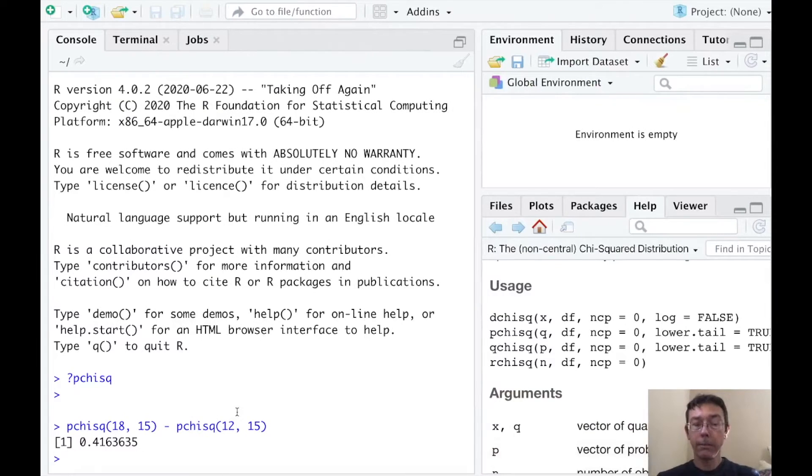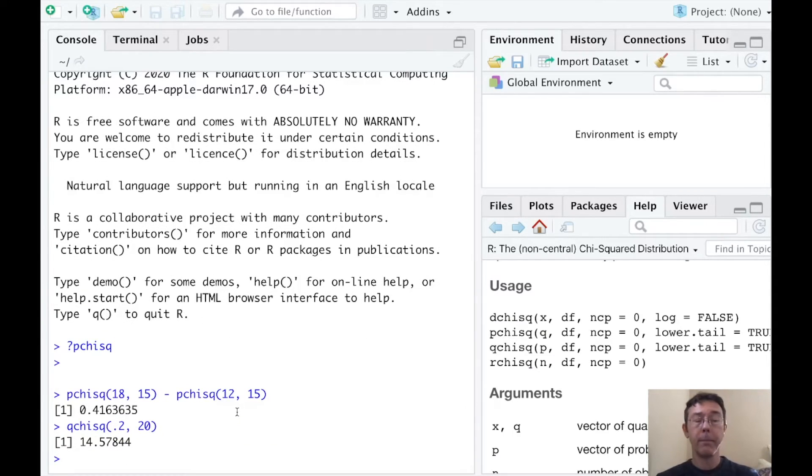Back to R. So the command is qchisq. In this case, the percentile we're interested in is 20% or 0.2. And of course, we're in a distribution with 20 degrees of freedom. So in this case, the x value of interest is 14.57844. Eighty percent of the probability in the distribution chi-squared of 20 is going to lie to the right of that x value.